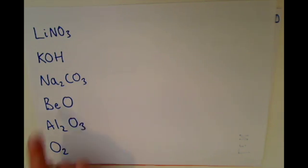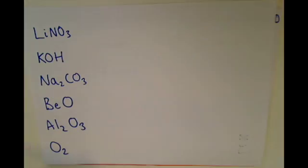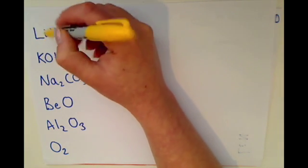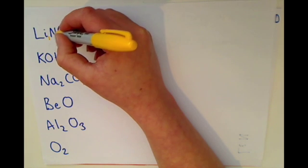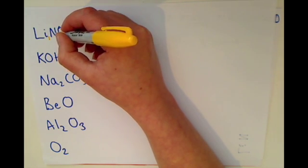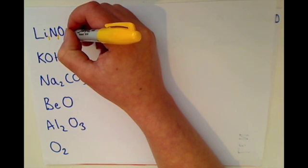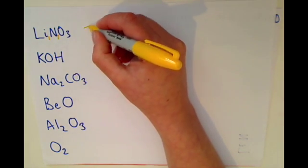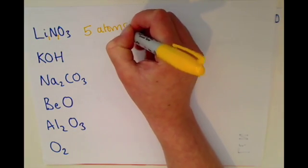So let's see how you got on. Lithium nitrate here, it's got some numbers in and other elements don't have a number next to them. Let's look at lithium first of all. No number here, so we know that's got one atom of lithium. Nitrogen, no number here, but we know that that's got one atom of nitrogen plus three atoms of oxygen, so three plus one plus one makes five atoms in that compound.